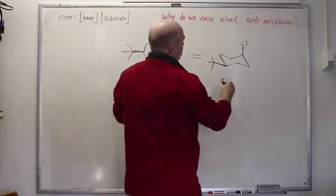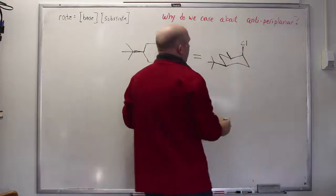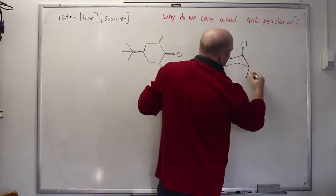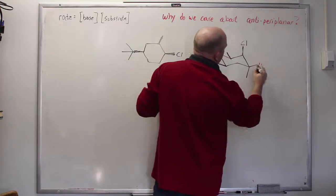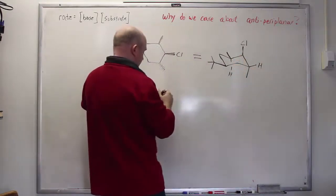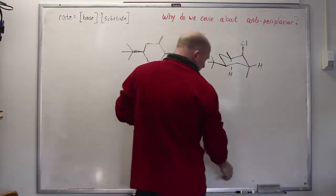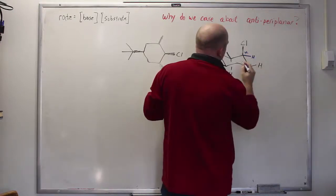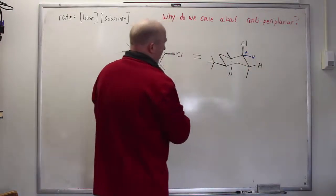This methyl group is up which places it equatorial right there. This methyl group is down which places it right there. Therefore we have hydrogens at this position and a hydrogen down in the back at that position there. Why do I care about those two hydrogens? Well of course there's also a hydrogen at this position but this is the alpha carbon. That's the one that's not going anywhere.